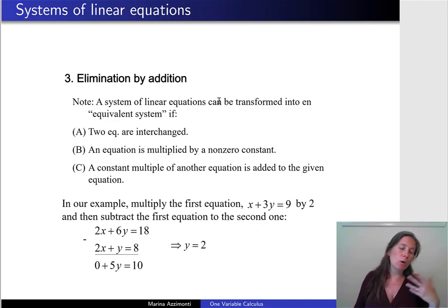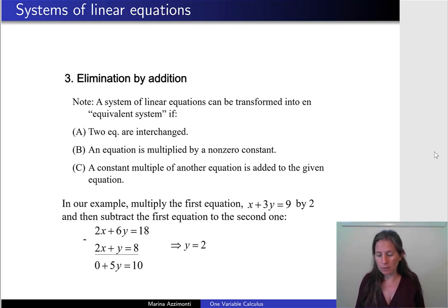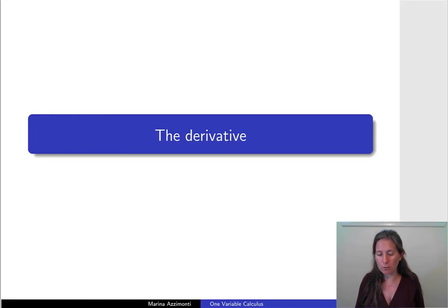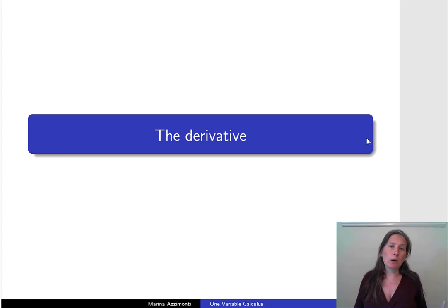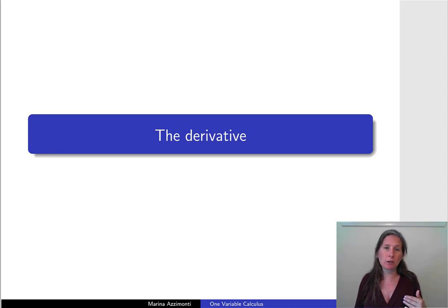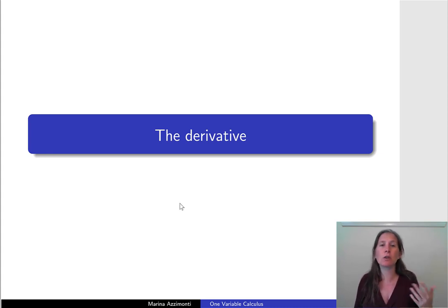You can also solve by elimination by addition, though this method is almost never used in practice. With that, we conclude the second sub-module. Next, we will talk about derivatives, connect them to slopes, relate this back to properties of functions such as whether they are increasing or decreasing, and finally to optimization.